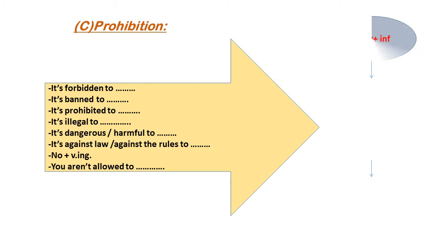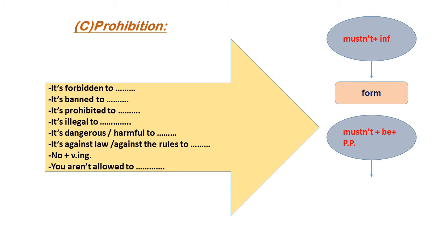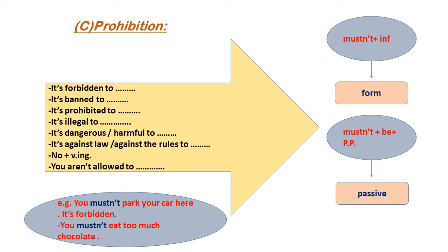Now we have the prohibition. The prohibition means something is forbidden. We use 'mustn't' plus the infinitive to express prohibition; the passive form is 'mustn't + be + past participle.' We use 'mustn't' when something is forbidden, banned, prohibited, illegal, dangerous, harmful, or against the law or rules. When you see a sign saying 'no swimming,' you mustn't swim — you aren't allowed or permitted to do something.